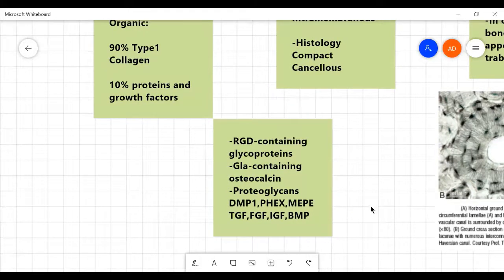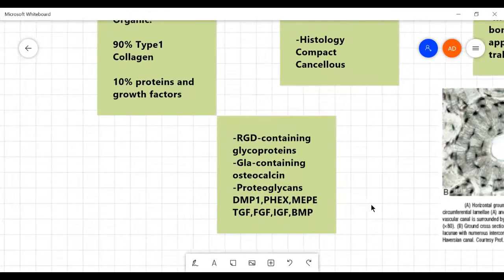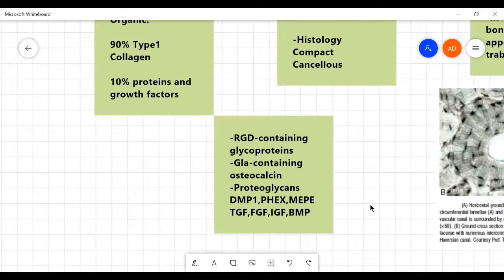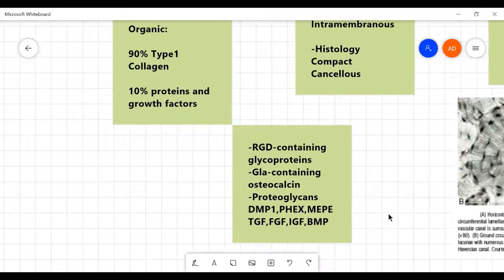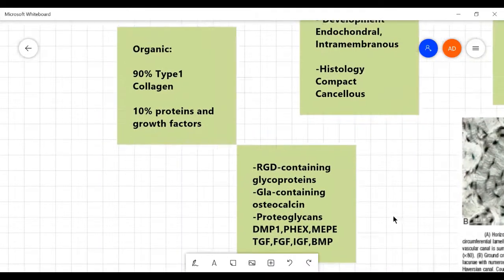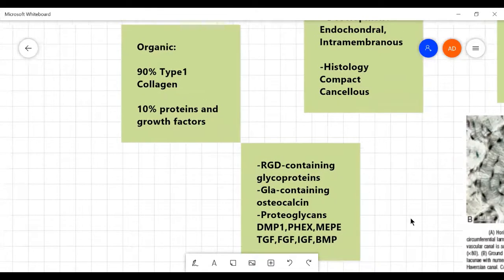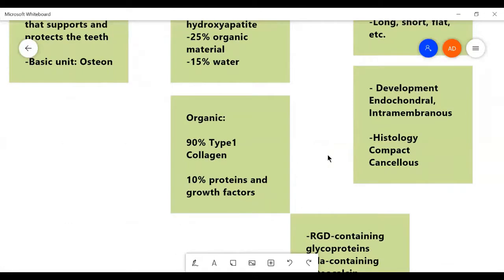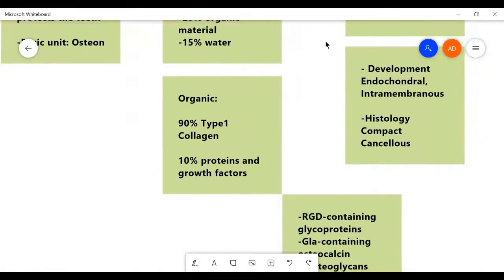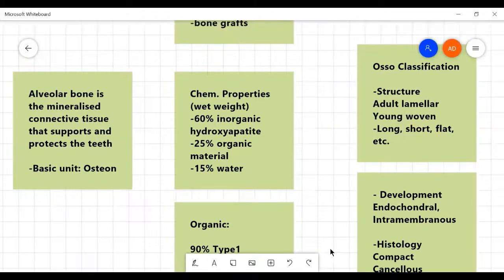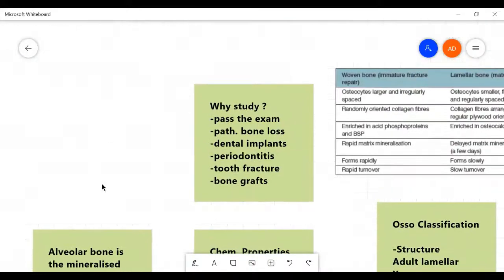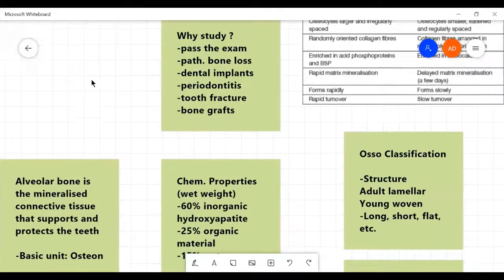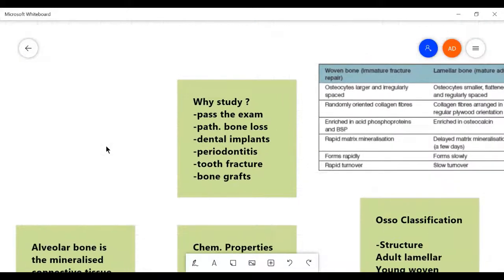And MEPE, transforming growth factors, fibroblast growth factors, insulin growth factors, bone morphogenetic growth factors. And RGD stands for arginine glycine lysine in the protein amino acid chains.